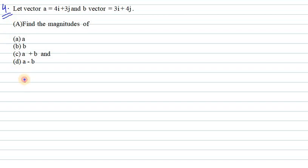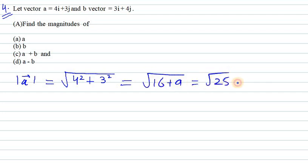So vector magnitude of a will be equal to under root 4 square plus 3 square. Now it gives us 16 plus 9 which is equal to under root 25 and 5 square can be written as 25. So square and under root gets cancelled. So 5 is the answer for the first one.